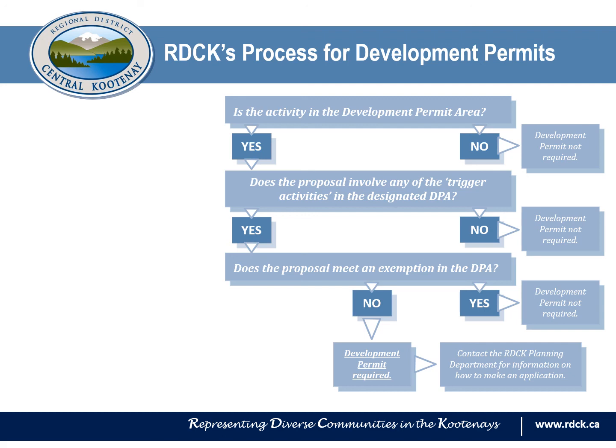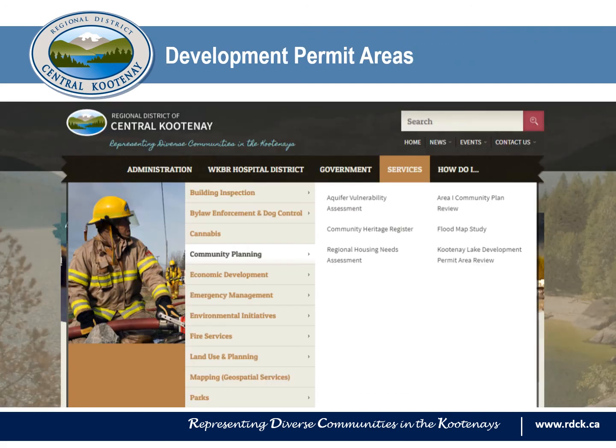The next step is to contact the RDCK Planning Department for more information on submitting a complete application, and RDCK staff will be able to help walk you through the application process. If you'd like to learn more about land use planning in the RDCK, visit the community planning page on our website, where you'll find more information on development permits, zoning, and other helpful information on land use.